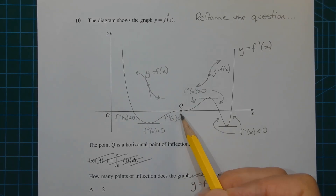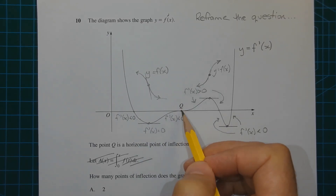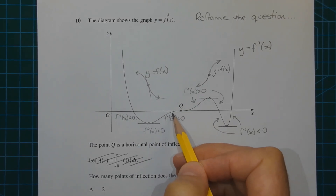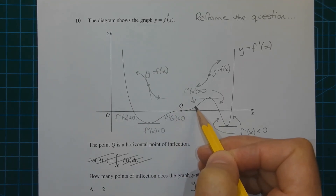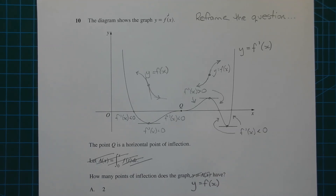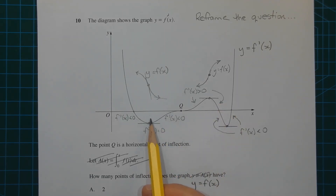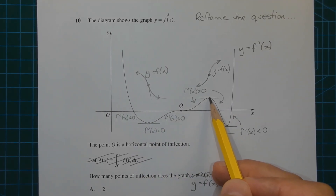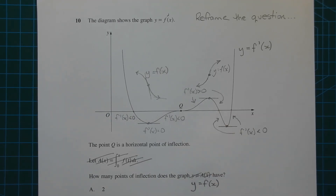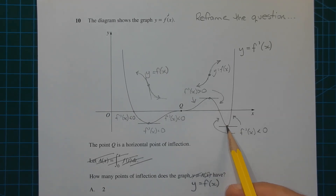Now point q is a bit of a distractor. If you look at point q, the y value to the left of point q is negative but the y value to the right of point q is positive. So this can't be a point of inflection on the curve y equals f of x. For similar reasons to what was explained, this point here and also this point here each correspond to an inflection point on the curve y equals f of x.